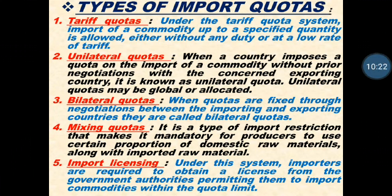Next is mixing quotas. Mixing quota is a type of import restriction that makes it mandatory for a producer to use a certain proportion of domestic raw material along with imported raw material. Mixing quota means the government of a particular country makes it compulsory for the producer that whatever commodity you are producing, 50% of the raw material must come from our nation and you can import only 50% of raw material from other nations.